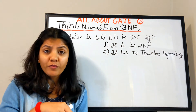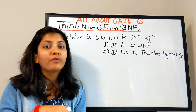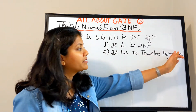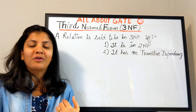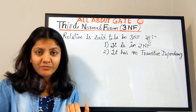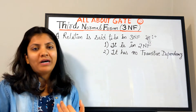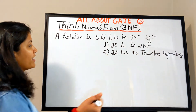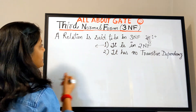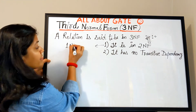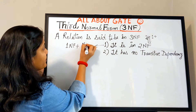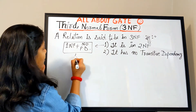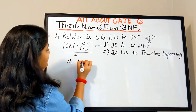The relation we want to check must first be in second normal form. The second condition is that it has no transitive dependency. Recall that for second normal form, the relation must be in first normal form and have no partial dependency. So for third normal form, it must be in first normal form, have no partial dependency, and also have no transitive dependency.